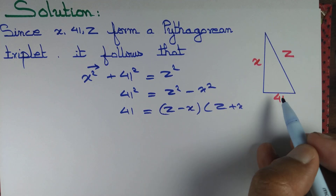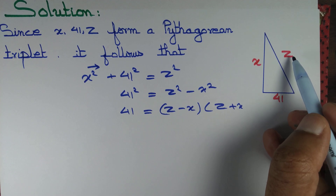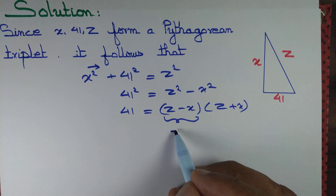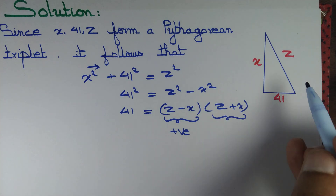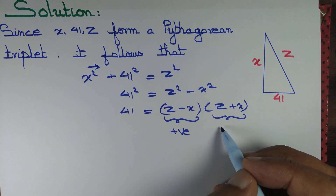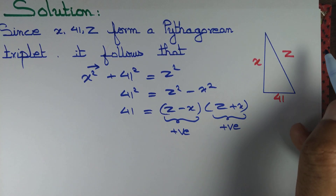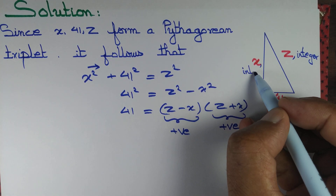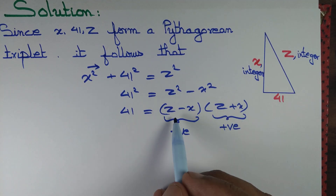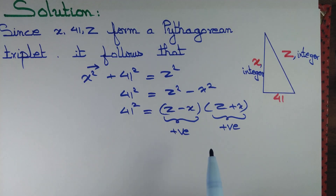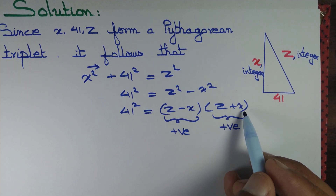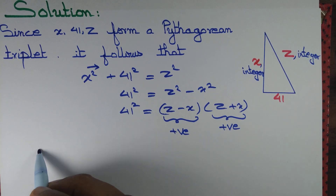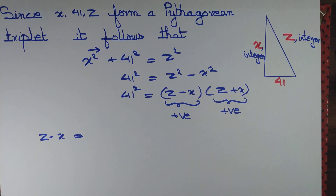So we can write this as (z minus x) into (z plus x). Now z, being the length of the hypotenuse, is the longest side in a right angle triangle, so z is greater than x, so z minus x is positive. z plus x also has to be positive because both z and x are lengths. Further, a Pythagorean triplet has to be integral — z and x both have to be positive integers. So z minus x and z plus x are positive integer factors of 41 squared.